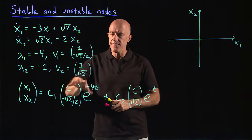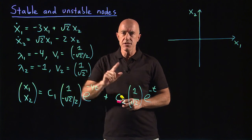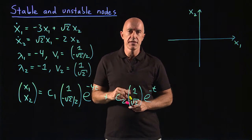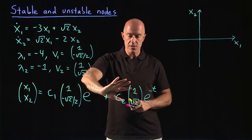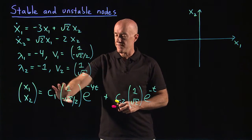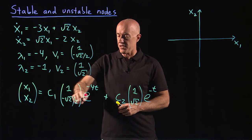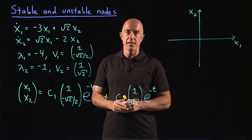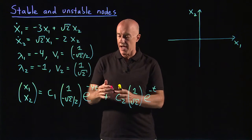Well, the eigenvectors are the key here. We can consider initial conditions such that c2 equals 0. So then this whole term doesn't contribute, and then our solution follows this first term. Because c1 is a scalar, e to the minus 4t is a scalar, then the solution will follow this eigenvector.